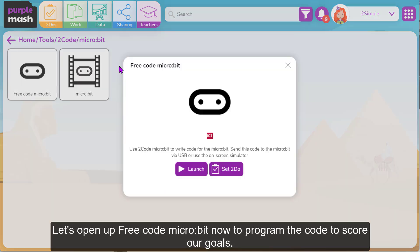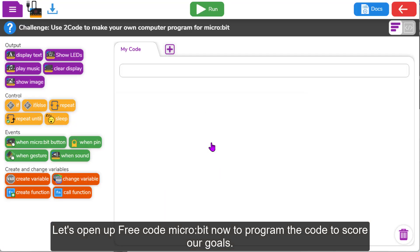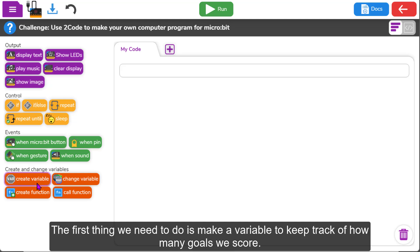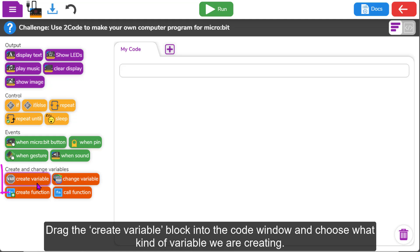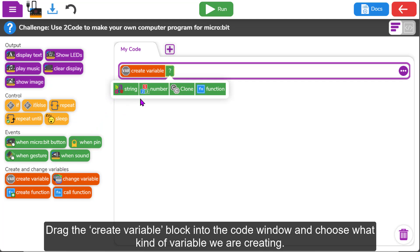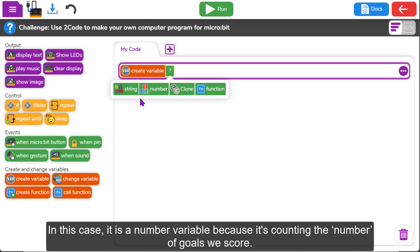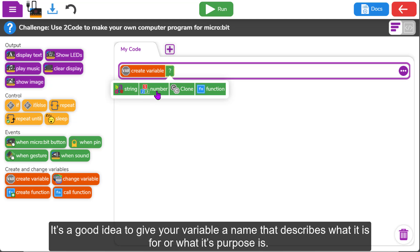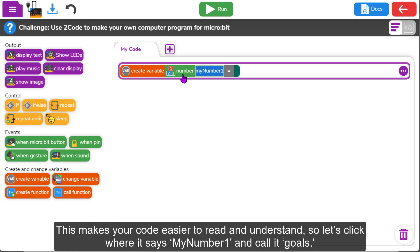Let's open up FreeCodeMicrobit now to program the code to score our goals. The first thing we need to do is make a variable to keep track of how many goals we score. Drag the create variable block into the code window and choose what kind of variable we are creating. In this case it is a number variable because it is counting the number of goals we score. It is a good idea to give your variable a name that describes what it is for or what its purpose is. This makes your code easier to read and understand.